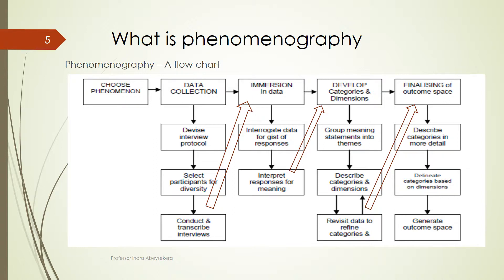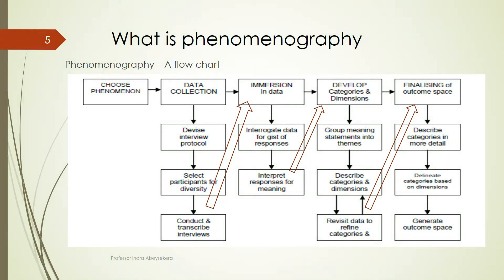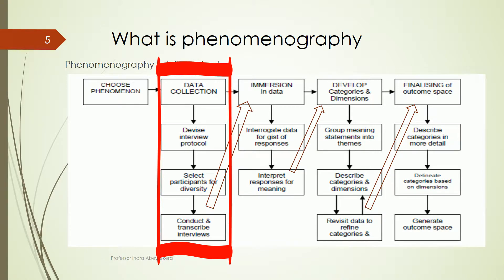If we look at a phenomenography flowchart, we first choose a phenomenon, then we collect data. To collect data, we devise an interview protocol and select participants for diversity of thinking or diversity of experiencing the phenomenon. Then we conduct the interviews and transcribe them.